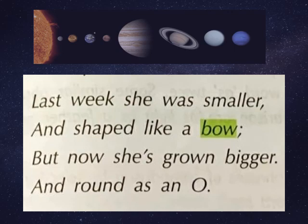Last week, she was smaller and shaped like a bow. But now, she is grown bigger and round as an O. What happened last week? The moon was very small and it looked like a bow. But now, it has grown bigger and is looking round as the shape of the letter O.